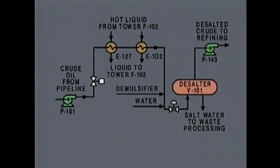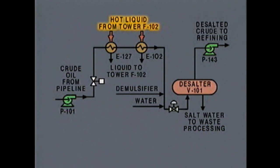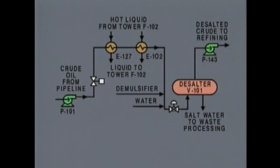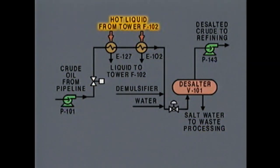The major input to this system is crude oil from a pipeline. The diagram also shows that hot liquid from distillation tower F-102 enters the system. This is a flow diagram of a crude oil desalter system — it shows the flow paths of material as well as the types of equipment in the system. The liquid provides heat input to the system.